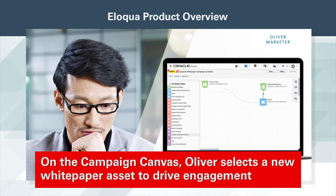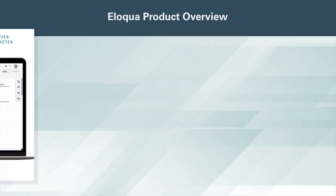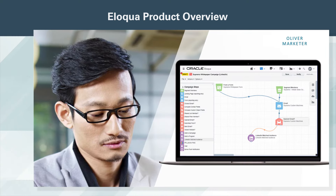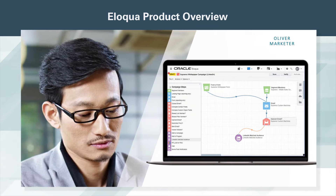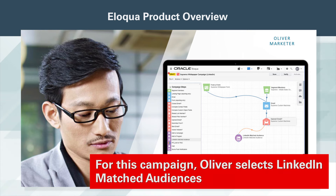On the campaign canvas, Oliver selects a new white paper asset to drive engagement. He adds campaign steps to send an email to those that download the paper. Knowing email is not always the best channel for everyone, he selects a different channel — LinkedIn Matched Audiences — to engage the leads who do not open the email.